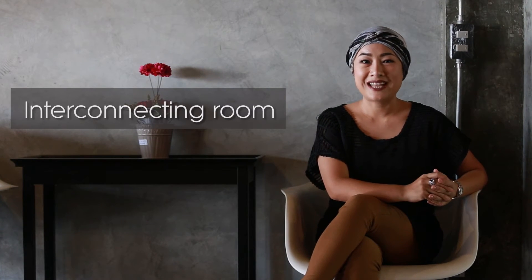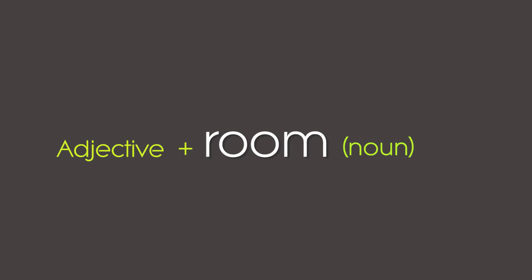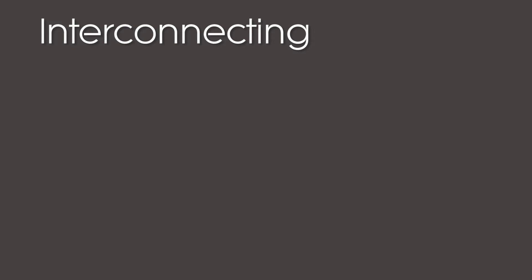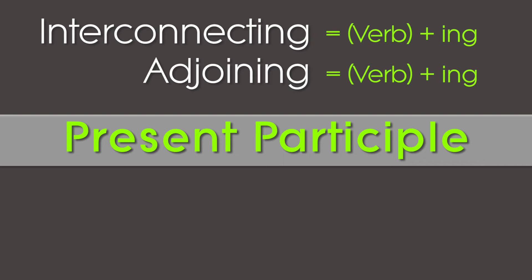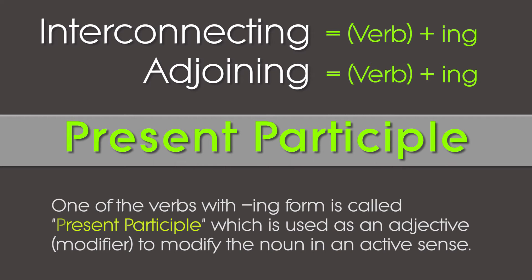Before we learn more room types, observe these two words: Interconnecting Room and Adjoining Room. The word 'Room' is a noun. The words placed before the noun function as adjectives — they modify the noun. 'Interconnecting' and 'Adjoining' are verbs with -ING added. One of the verbs with ING forms is called a Present Participle, which is used as an adjective or modifier to modify the noun in an active sense.